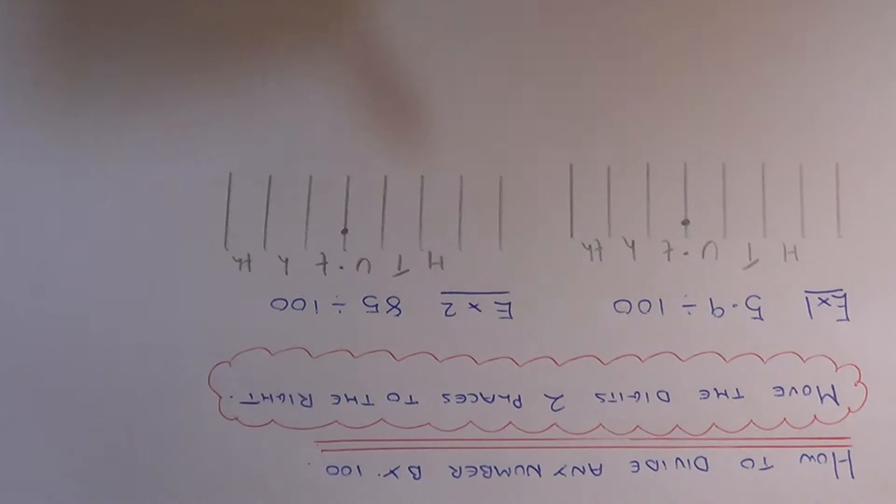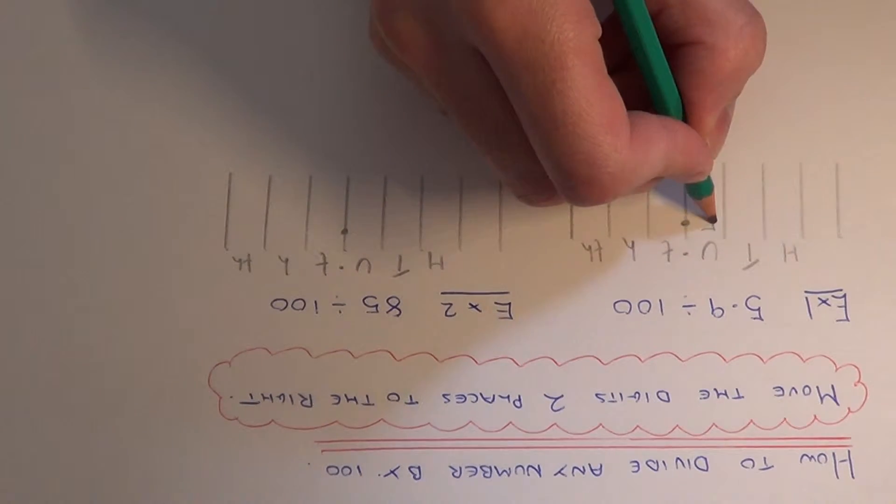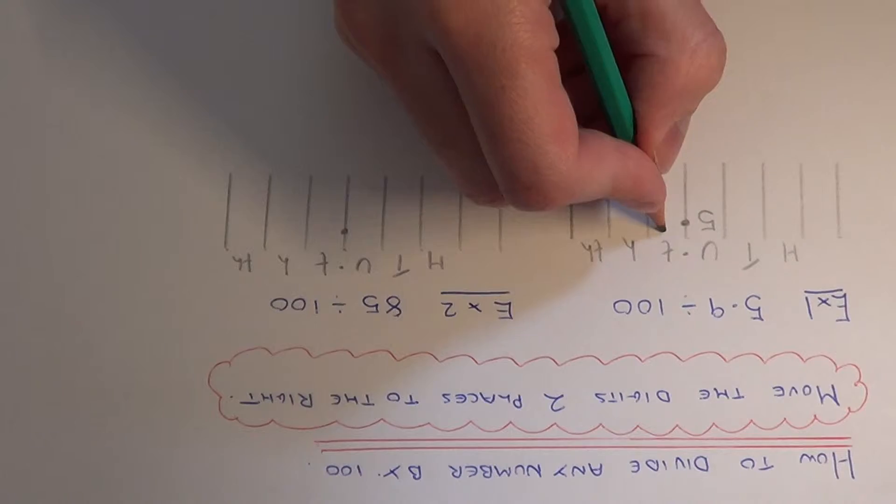We just need to write 5.9 into the correct columns. We have 5 units and 9 tenths.